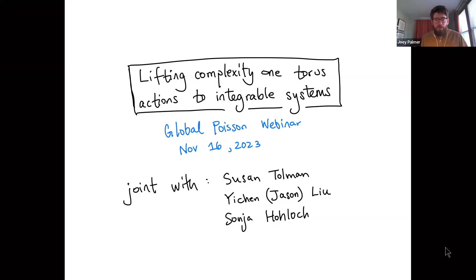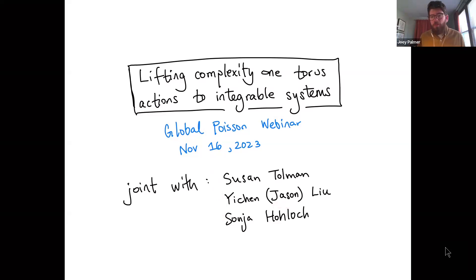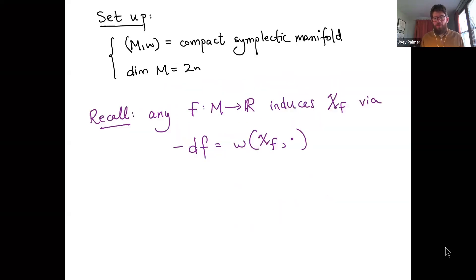Different aspects will be joint with Sonja Hohloch, or with Susan Tolman and Leo, who you may know as Jason, who is her grad student. I'll start with some setup which will have no surprises for most of the people here.